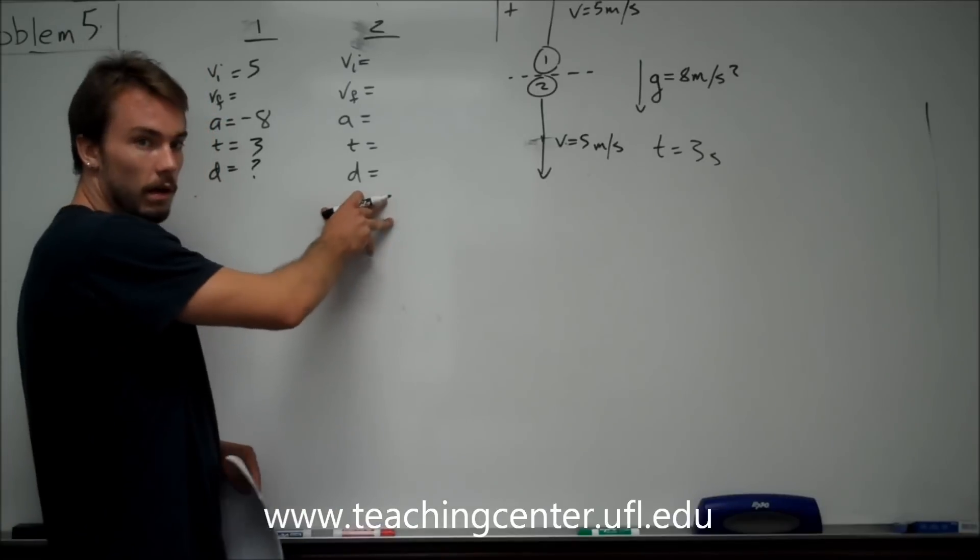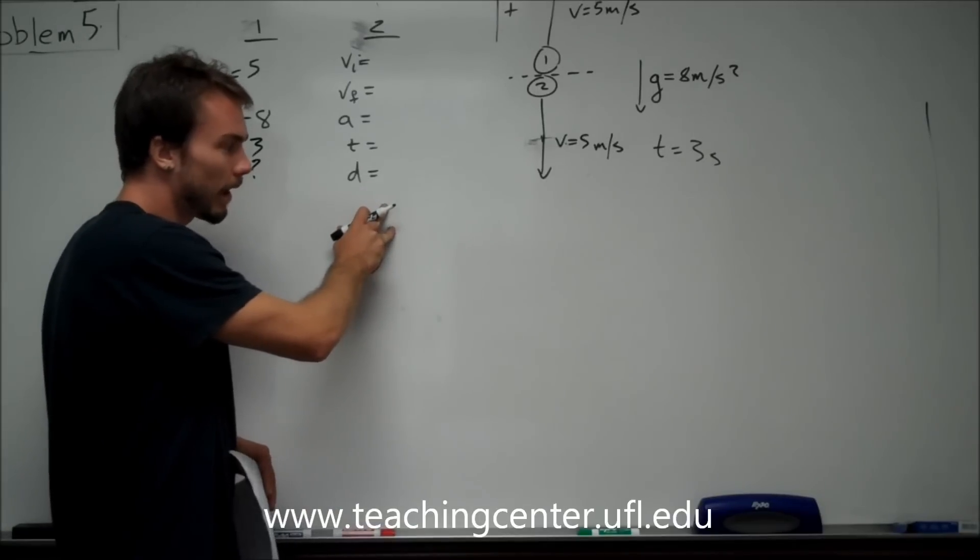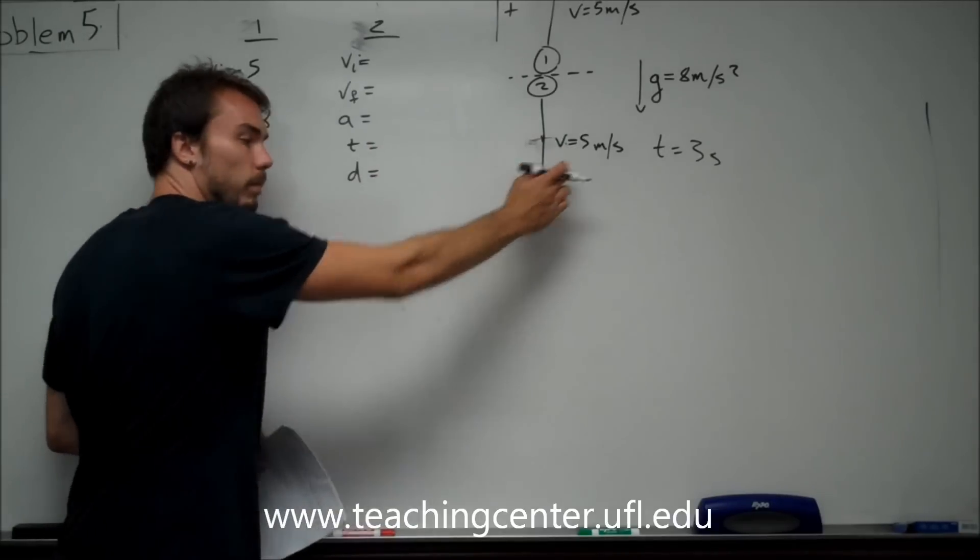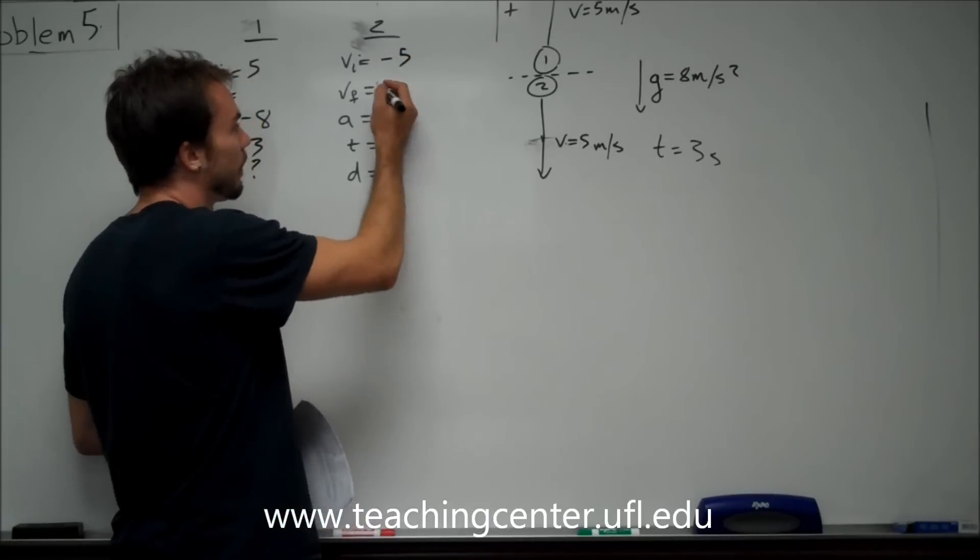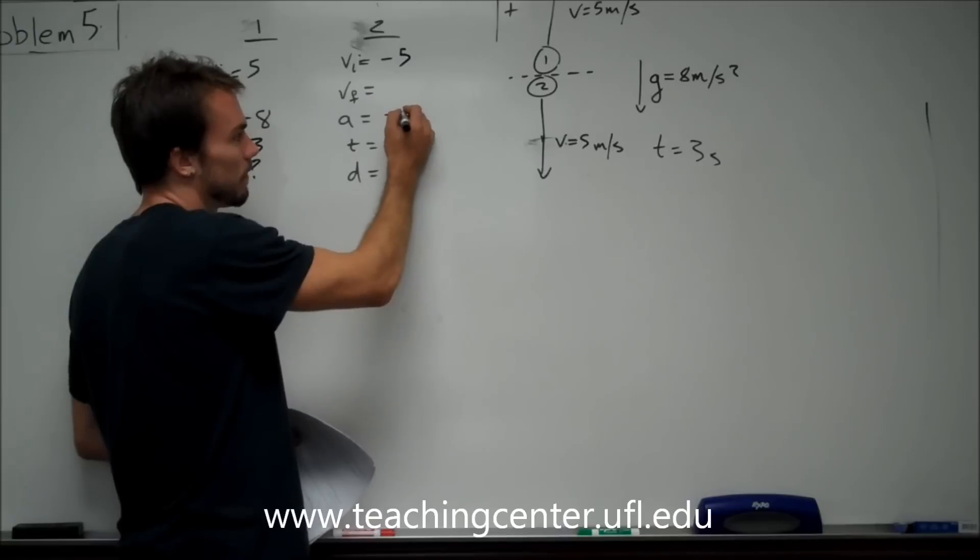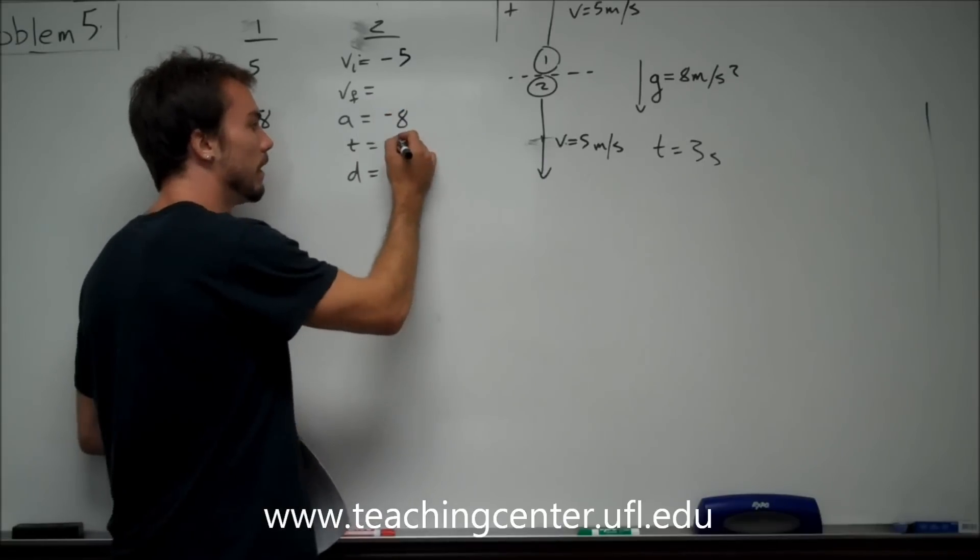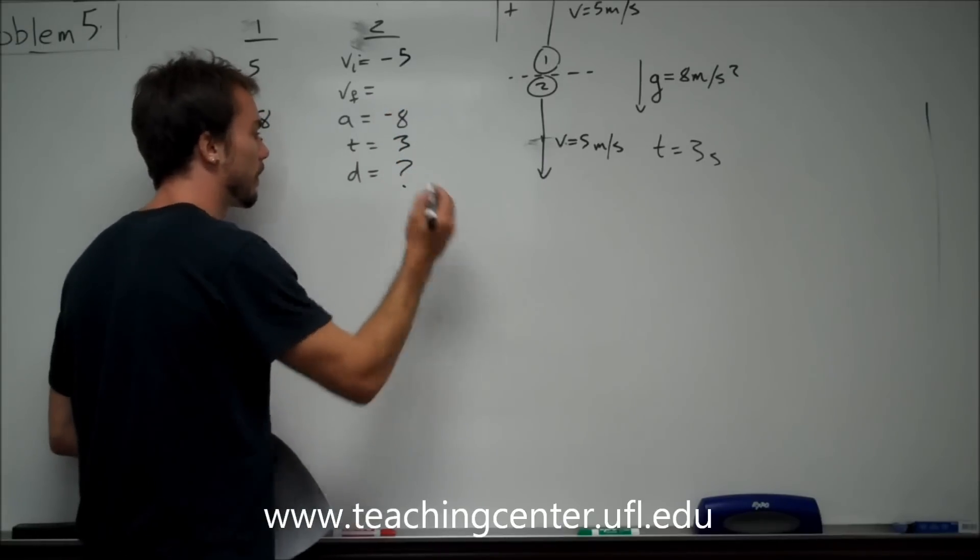Same thing over here, almost identical, except the velocity in this one points downwards, thus it's going to have a negative sign in front of it. Still don't know this. We know this is negative 8 for the acceleration. Time is 3, and once again, looking for the displacement.